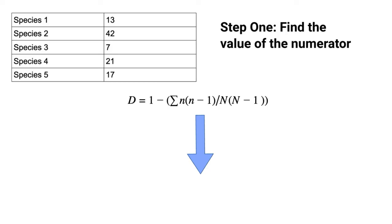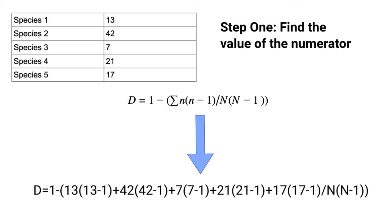In our example, the numerator would look something like this: 13 times 13 minus one plus 42 times 42 minus one, etc.